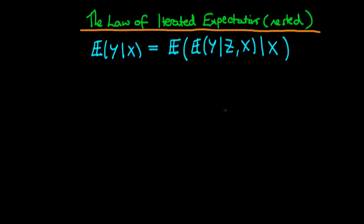In this video, I want to provide an introduction to the law of iterated expectations in its nested form. By its nested form, I mean it's written like I've already written it here. Mathematically, it means that the expected value of y given x is equal to the expectation of the expected value of y given z and x, when I condition on x.